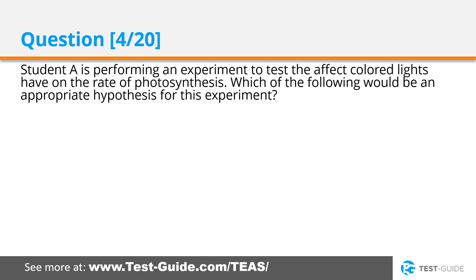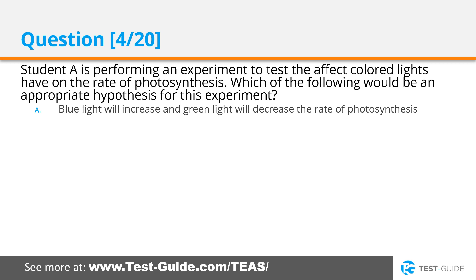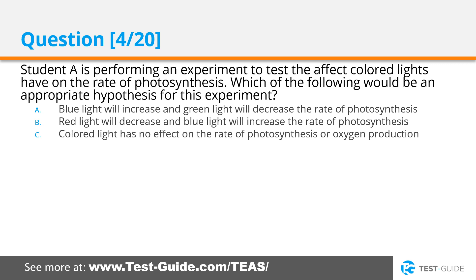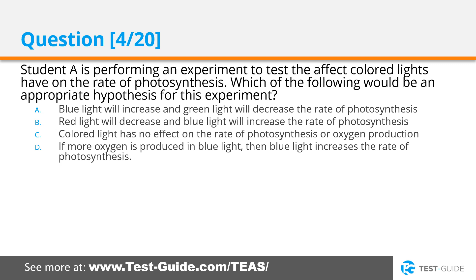Question 4. Student A is performing an experiment to test the effect colored lights have on the rate of photosynthesis. Which of the following would be an appropriate hypothesis for this experiment? Blue light will increase and green light will decrease the rate of photosynthesis. Red light will decrease and blue light will increase the rate of photosynthesis. Colored light has no effect on the rate of photosynthesis or oxygen production. If more oxygen is produced in blue light, then blue light increases the rate of photosynthesis.